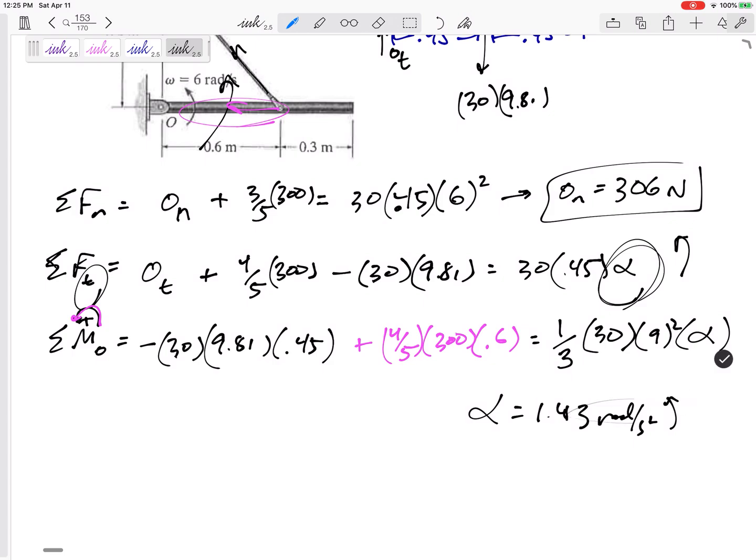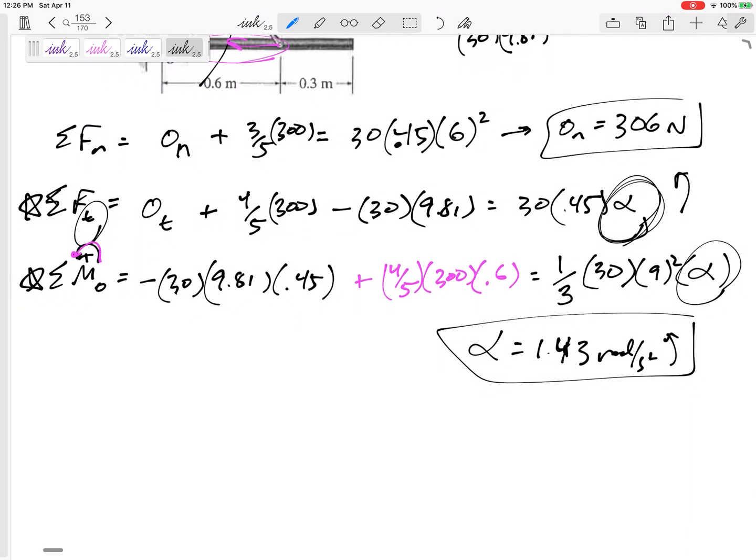It came out positive in both equations. My alpha was counterclockwise. So this came out positive. So yes, counterclockwise, 1.43 radians per second squared. Plug that back in to right there and get O tangential 73.6 Newton.